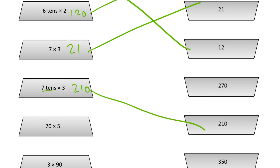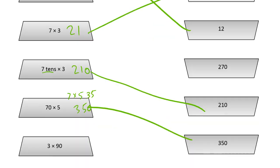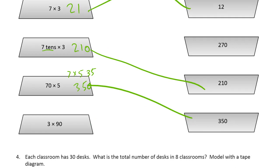Seventy times five. Well, think seven times five for that. That's thirty-five. But if they're tens, then we're going to have three hundred fifty.